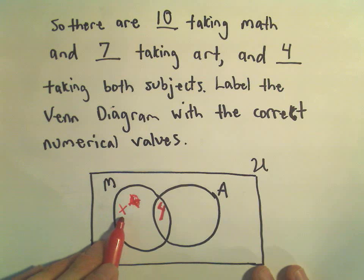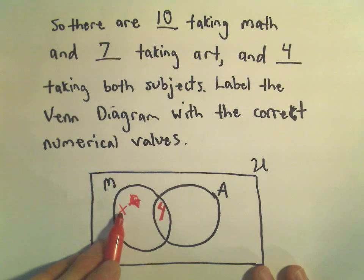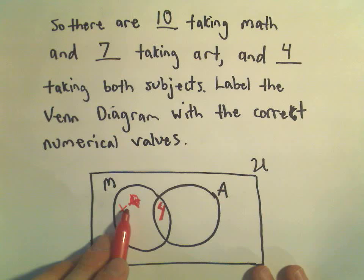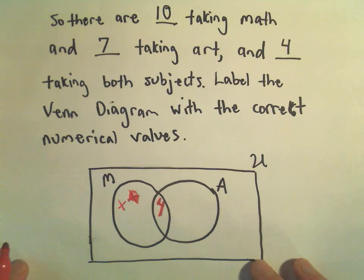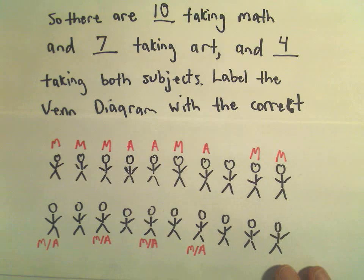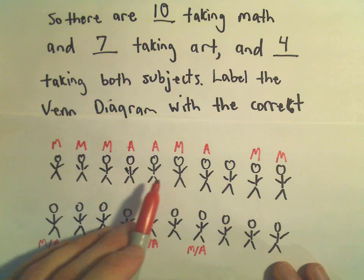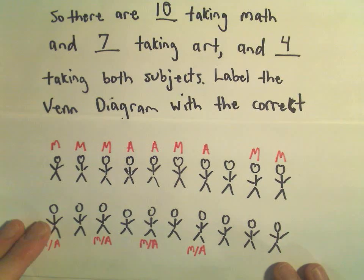Suppose we stick a little X in over here. Now I'm in the math circle, but I'm not in the art circle. So any person that's in the M circle but outside of the A circle, that means you're taking math but not art. Well, how many people were taking math but not art? We could go through here and count. We could say there's one, two, three, four, five. There's six people who are taking math but not art.